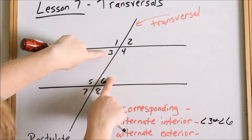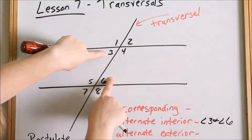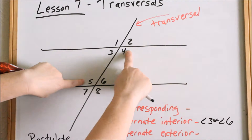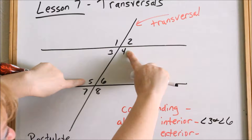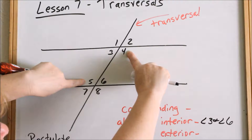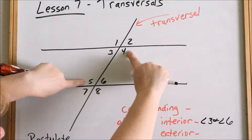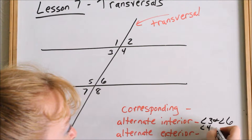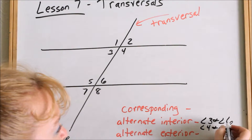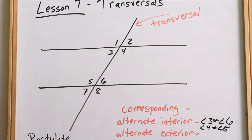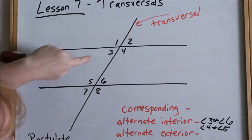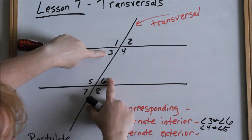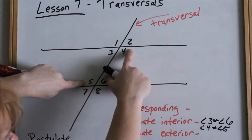Angles three and six are alternate interior — they are inside the parallel lines and on opposite sides of the transversal. Angles four and five are also alternate interior — they are inside the parallel lines but on opposite sides of the transversal. By the way, alternate interior angles are congruent. Angle three and angle six are congruent, and angle five and angle four are congruent.